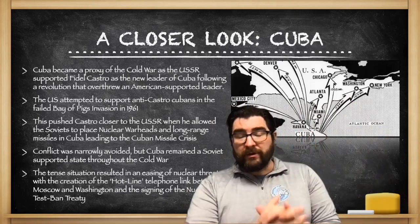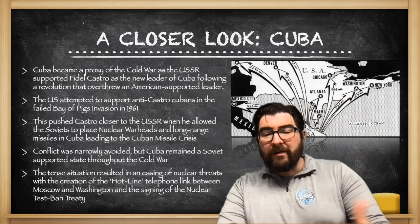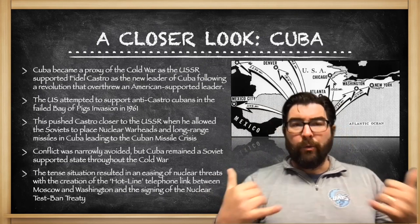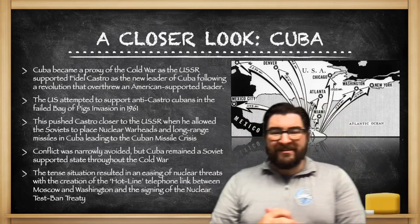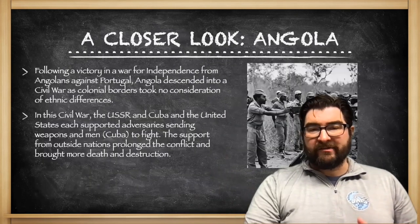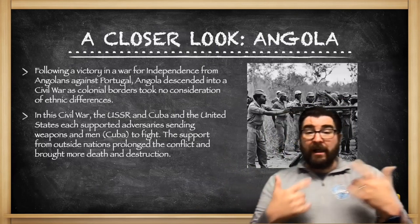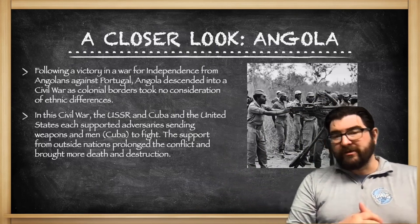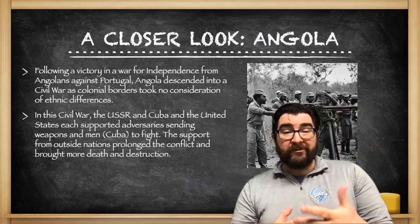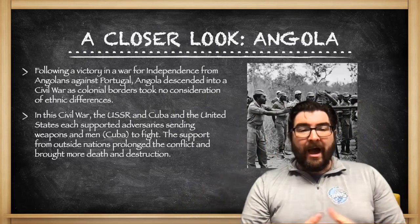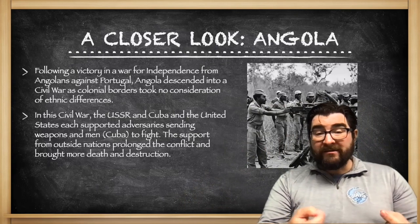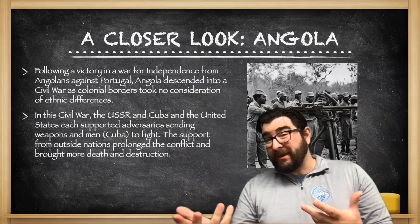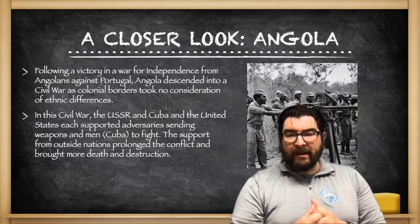The tense situation from the Cuban Missile Crisis did result in the creation of a hotline — an actual telephone link between Moscow and Washington — so the two parties could communicate during future crises, and the signing of a nuclear test ban treaty. In Africa, following a victory in a war for independence from Portugal, Angola descended into a civil war as colonial borders took no consideration for ethnic differences. In this civil war, the Soviets, Cubans, and the United States each supported adversaries, sending weapons and, in some cases, men — the Cubans sent soldiers into Angola to fight.